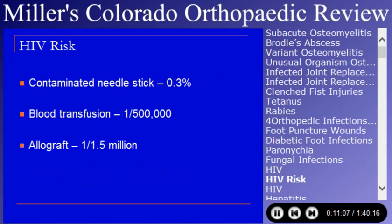HIV risk — I don't know what the risk to attending orthopedic surgeons is, but I get stuck at least once a quarter by a resident with a needle. The incidence of transmission is said to be 0.3%. It also occurs as a risk of blood transfusion; the newest number is probably closer to one in one and a half million, similar to the allograft incidence with more modern testing.